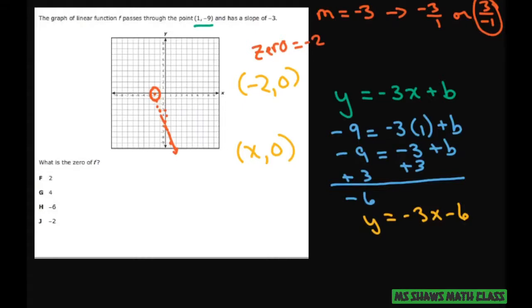So let's plug in our point. If we want y to be 0, then we set this up to be 0 equals -3x - 6 and solve for x.